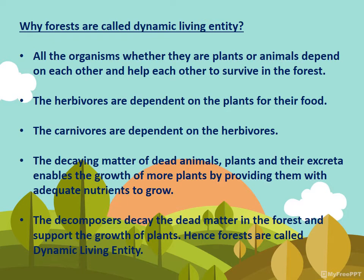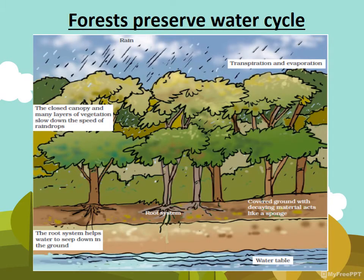Why are forests called a dynamic living entity? All organisms — whether plants or animals — depend on and help each other to survive in the forest. Herbivores are dependent on plants and carnivores depend on herbivores, forming the food chain. The decaying matter of dead animals also gives nutrition for growth. Decomposers decay the dead matter in the forest and support growth, so the cycle continues — hence forests are called a dynamic living entity.